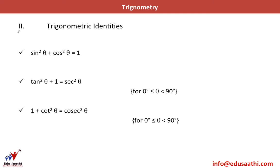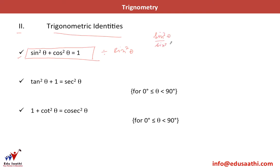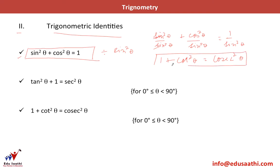Now let's move to the second topic: trigonometric identities. These are three identities which are very handy when solving questions. The key one to remember is: sin²θ + cos²θ = 1. If you divide this equation by sin²θ, you get 1 + cot²θ = cosec²θ, since cos/sin is cot and 1/sin is cosecant.